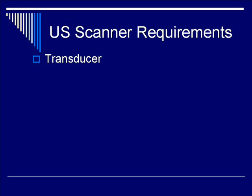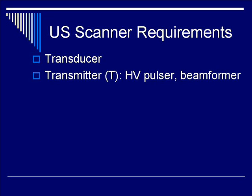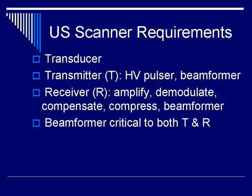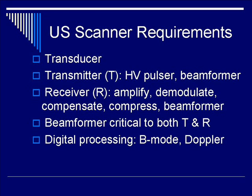Now let's move on to ultrasound scanner requirements. This includes a transducer, a transmitter feeding into a high-voltage pulsar and a beamformer, and a receiver whose job is to amplify, demodulate, compensate, compress, and beamform. The beamformer is critical to both transmit and receive. The digital signal processing aspect of the system processes B-mode and Doppler measurements.